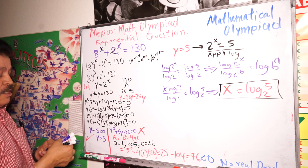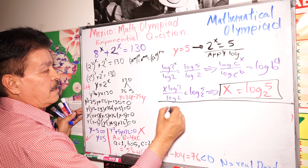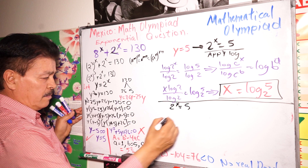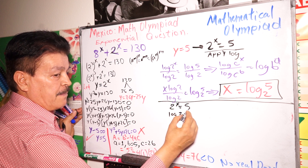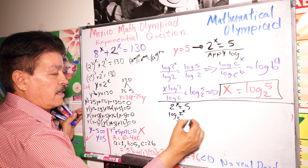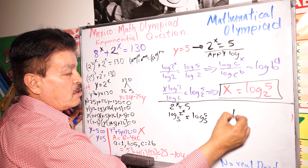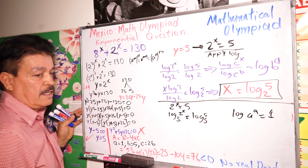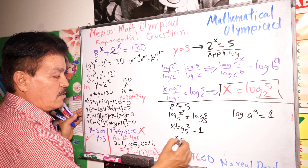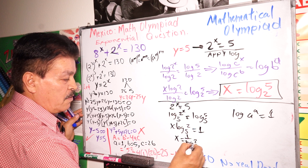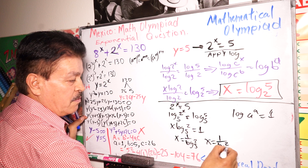Another way to solve this: from 2 to the X equals 5, apply log base 2. We get X times log base 2 of 2 divided by log base 2 equals log base 2 of 5. Since log of a base a equals 1, X times 1 equals log base 2 of 5, so X equals 1 divided by log base 2 of 5.